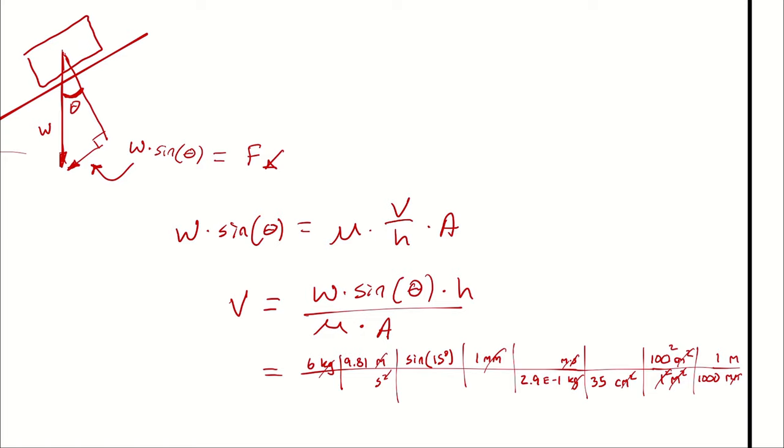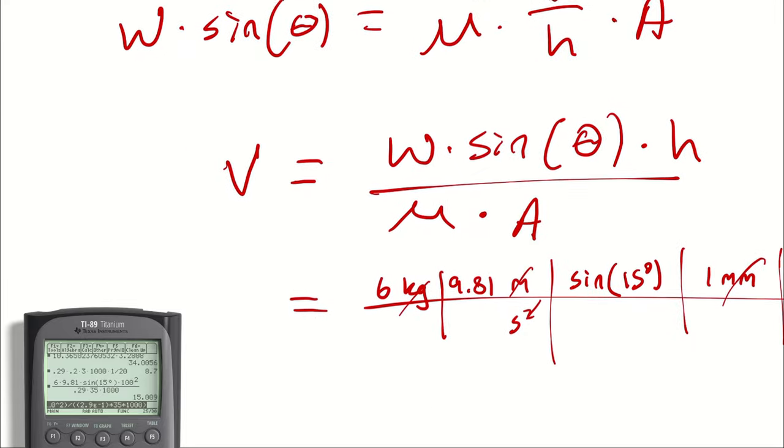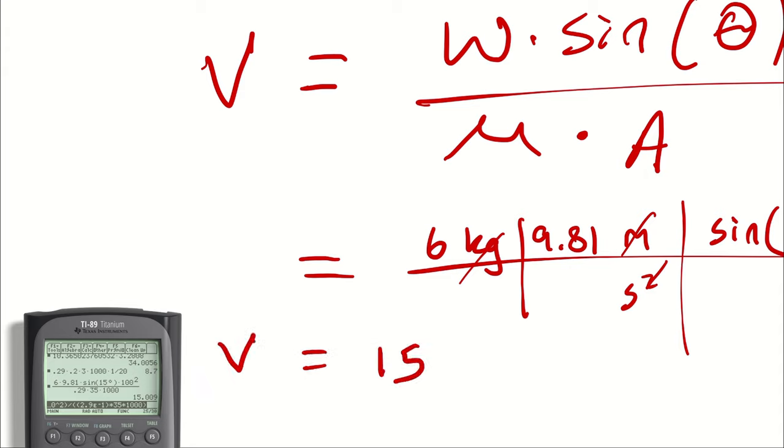So calculator, if you would please. We have 6 times 9.81 times the sine of 15, and I have to add in the degree symbol for this particular calculator because it's in radians right now. And then I'm multiplying by 100 squared, and I'm dividing by 2.9 E to the negative 1 multiplied by 35 multiplied by 1,000. So we feel pretty confident that the velocity that the block achieves is 15 meters per second.